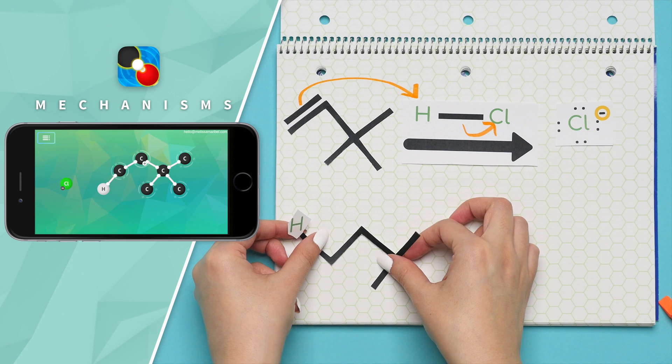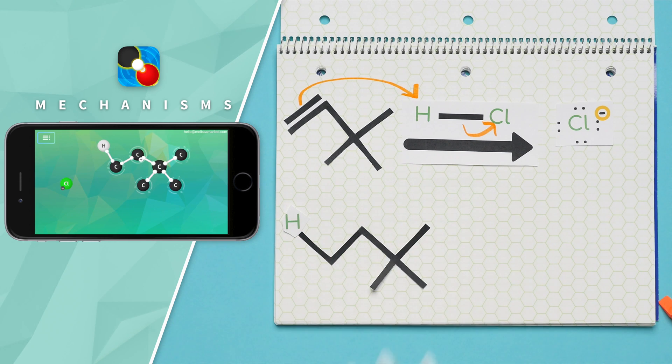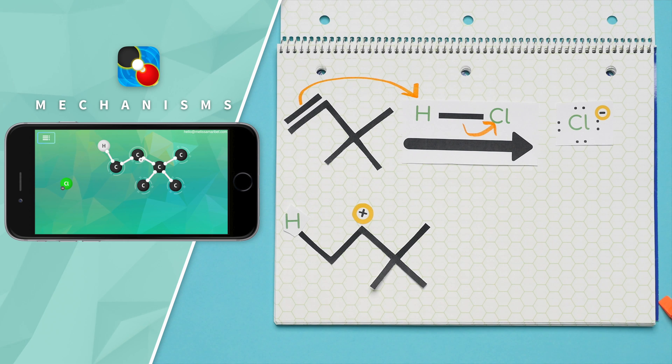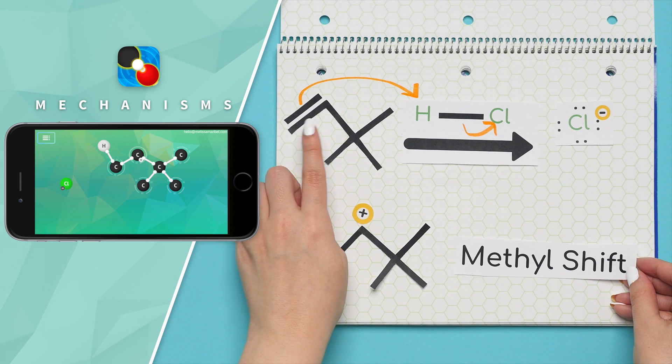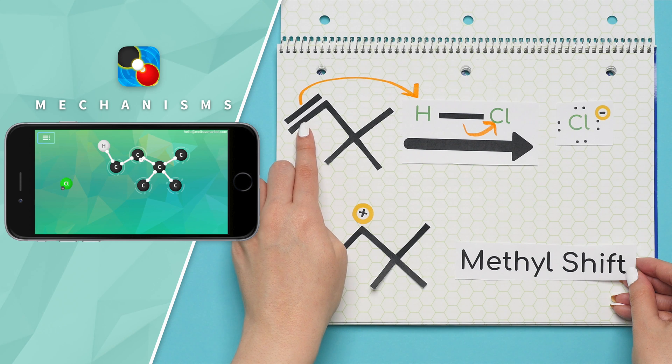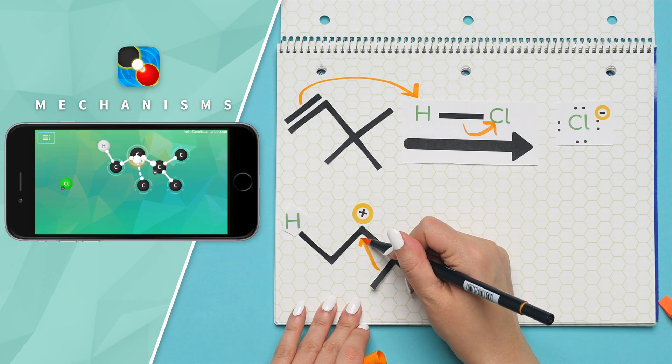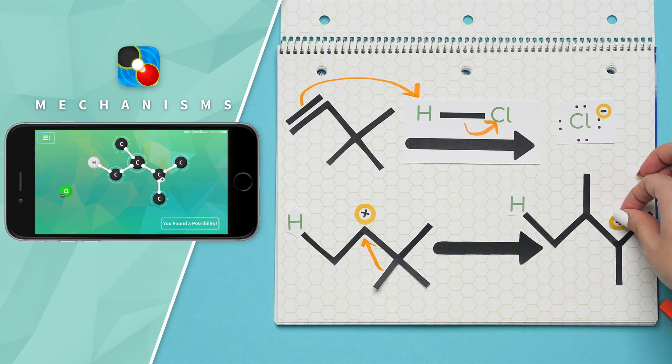Once again, we want the most stable carbocation, but we currently have a secondary carbocation. So we must do a methyl shift. We know to do this because our original structure had a double bond next to a quaternary carbon. We'll move this methyl group here, and our new carbocation is tertiary.